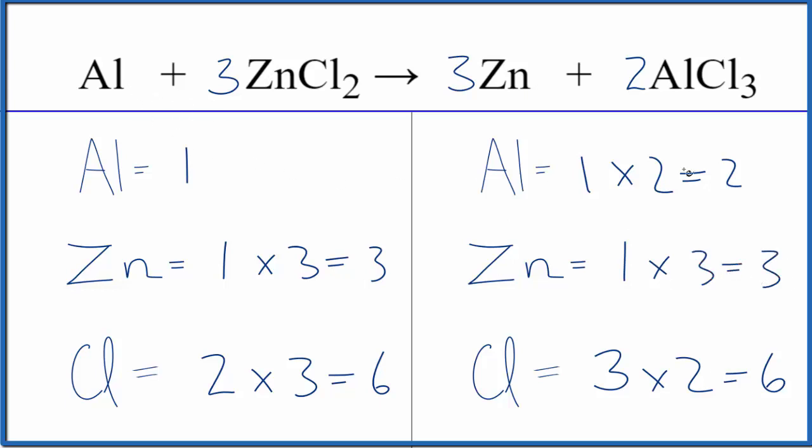And aluminum, we'll put a two in front of the aluminum. One times two gives us two of those. So this equation is balanced.